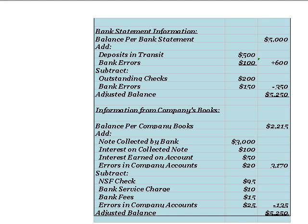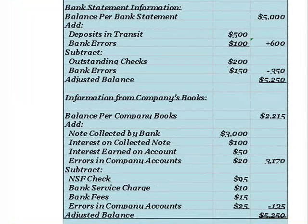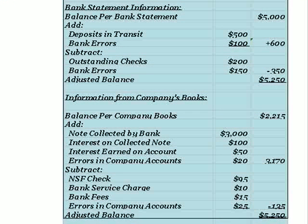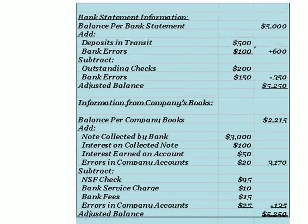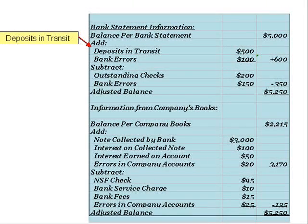Here we have a detailed example of a bank reconciliation, which we can use to illustrate the process and look at the things that account for differences between the bank balance and the company's own book balance. In this example, the balance according to the bank statement is $5,000, but the balance according to the company's own books is only $2,215. Let's begin with the bank balance. One of the things we'll need to add to the bank balance will be any deposits that we know we have made but that have not been recorded by the bank as of the bank statement date. These are called deposits in transit, and since we know we made them and the bank simply hadn't recorded them at the time the statement was prepared, we'll need to correct the bank balance and add to it the amount of these deposits.